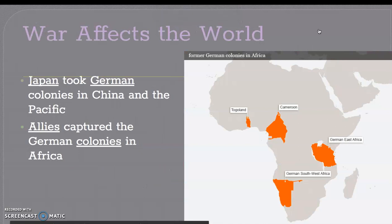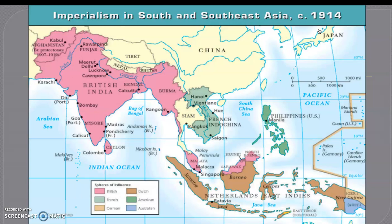As we can see here, we know that European countries had colonies in Africa and also in Asia. Japan starts to take German colonies in China and in the Pacific. And the Allies capture the German colonies in Africa — you can see these as German Southwest Africa, German East Africa, Cameroon, and Togoland. This is a map of what Asia looked like. Everything that belonged to Germany, mostly far to the right of the screen, is what Japan took over.